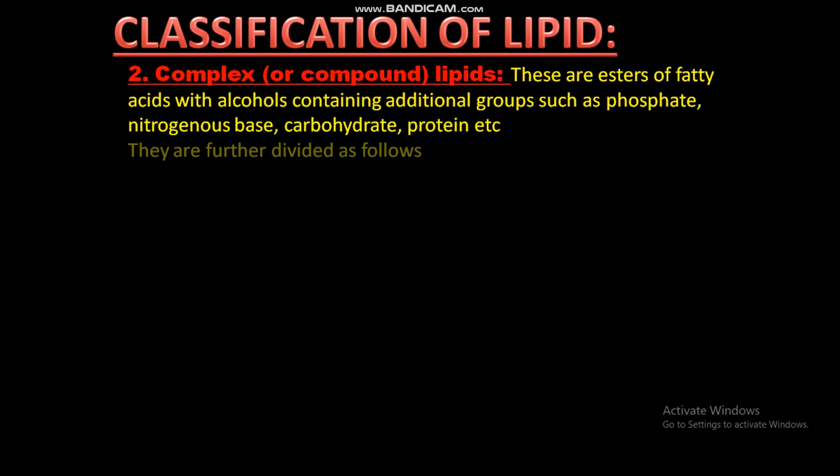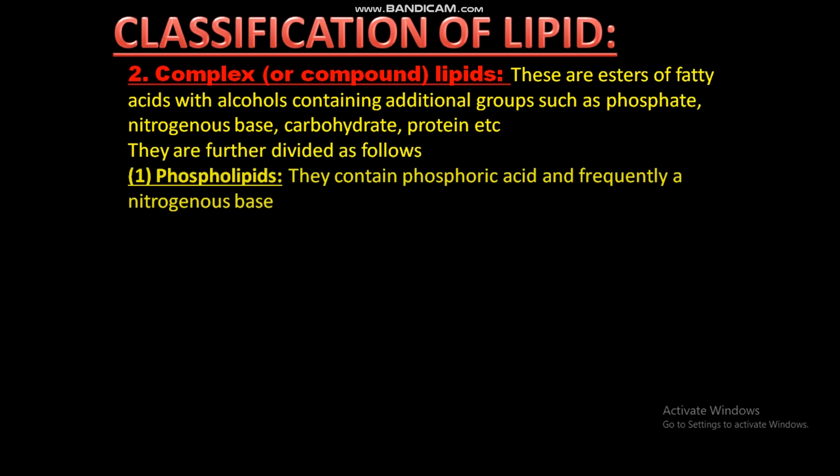2. Complex or compound lipids: these are esters of fatty acids with alcohols containing additional groups such as phosphate, nitrogenous base, carbohydrate, protein etc. They are further divided as follows. 1. Phospholipids: they contain phosphoric acid and frequently a nitrogenous base.